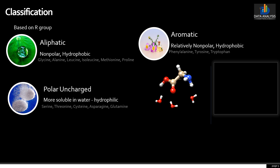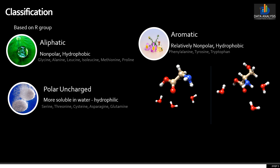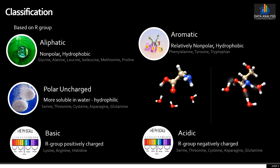Polar amino acids: the R groups of these amino acids are soluble in water because they contain functional groups that form hydrogen bonds with water. This class of amino acids includes serine, threonine, cysteine, asparagine, and glutamine. Among the charged amino acids, there are acidic and basic amino acids. Amino acids in which the R group is basic or positively charged are known as basic amino acids — lysine, arginine, and histidine. Amino acids in which the R group is acidic or negatively charged are known as acidic amino acids — glutamic acid and aspartic acid.